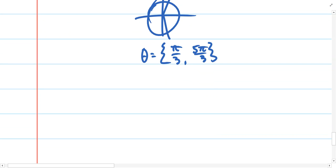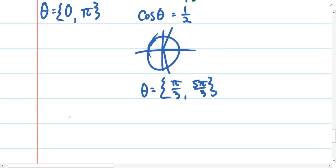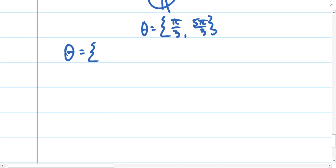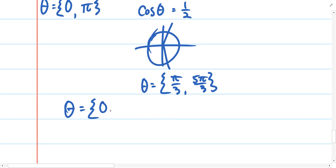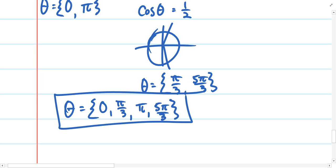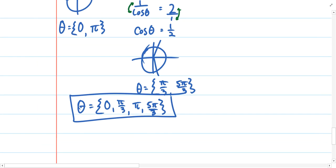And if I was reporting a final answer here or typing it into Math Excel, I would take the time to write them in numerical order. So the smallest angle is 0, then pi over 3, then pi, and then finally 5 pi over 3. And you can check these answers with a graph if you'd like.